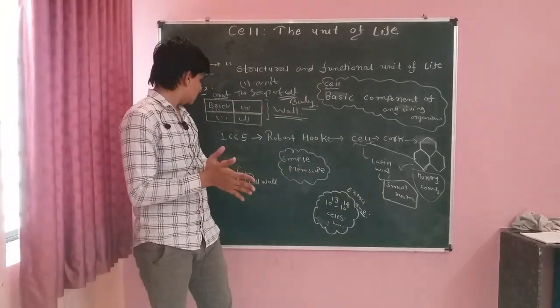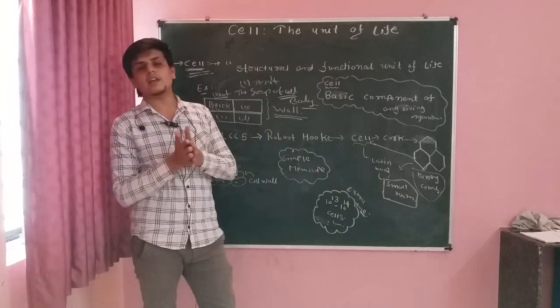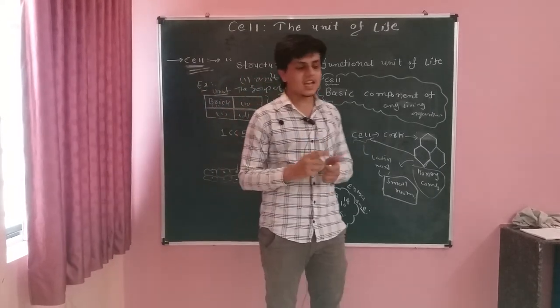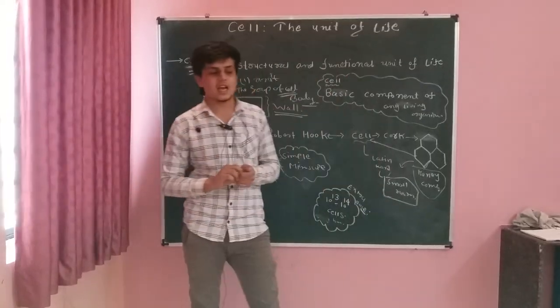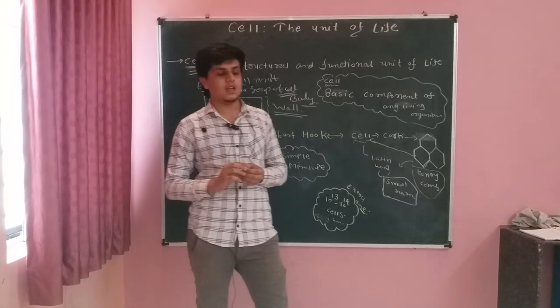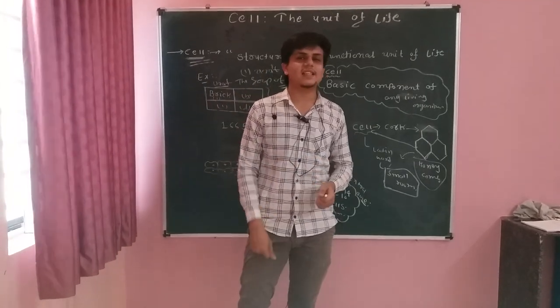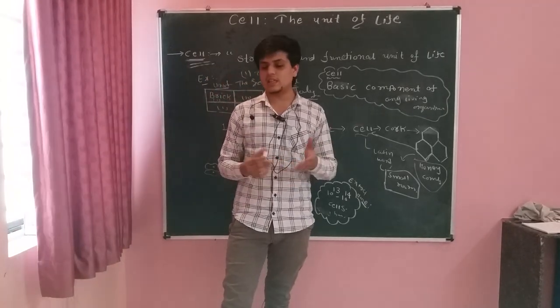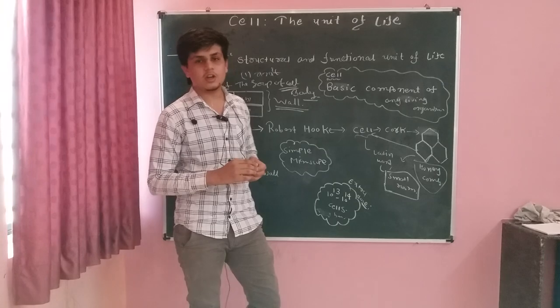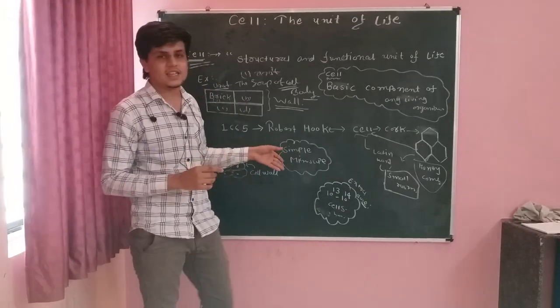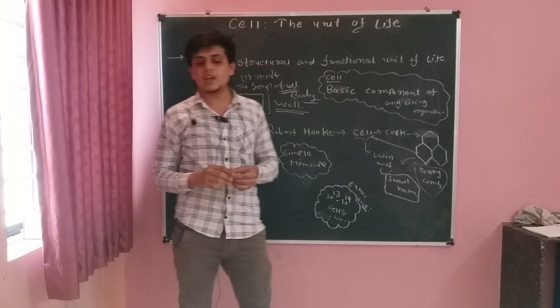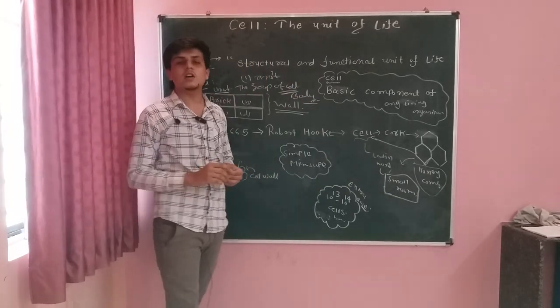Now let's start. Ek experiment karate hain hum. So, cell ko dekhne ke liye ek experiment karate hain. Humne liya ek onion. Kya liya? Onion peel. Ab uske andar hume cells dekhne hain. To abhi high technology ke microscope samne milte hain, jaisi ki compound microscope, electronic microscope, or simple microscope to pehle se hi thi. Abhi, humare colleges or schools mein, we can found a compound microscope in an easy way.